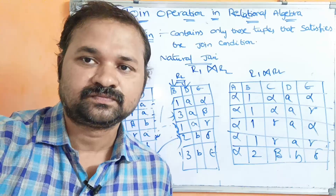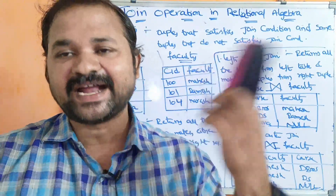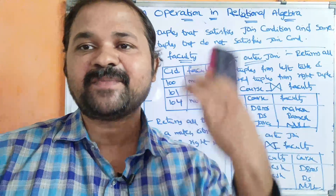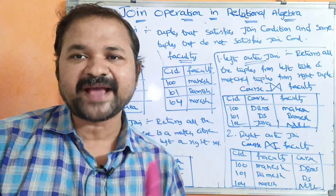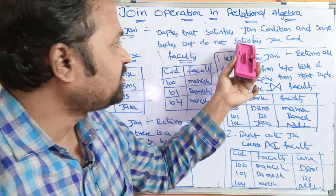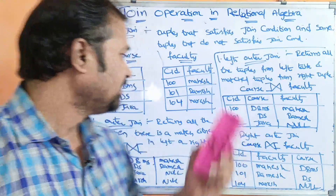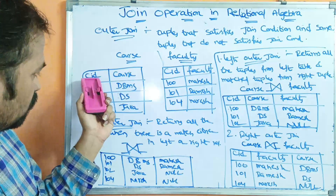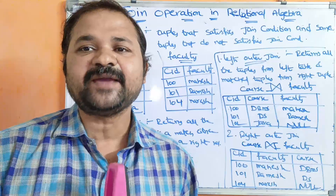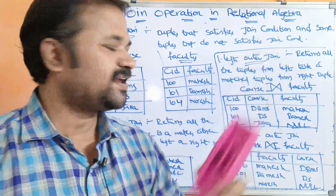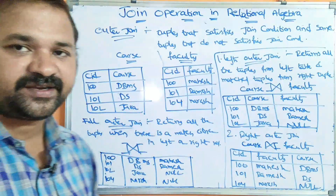Now let us see about outer join. Till now we have seen about inner join. Inner join produces only those tuples that satisfy the matching condition. Whereas outer join means it produces the matching tuples as well as the not-matched tuples also. We have three types of outer join: left outer join, right outer join, and full outer join.